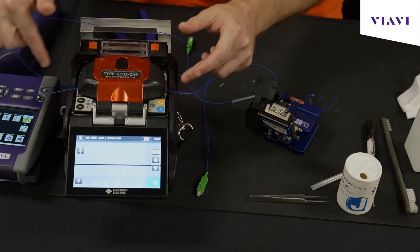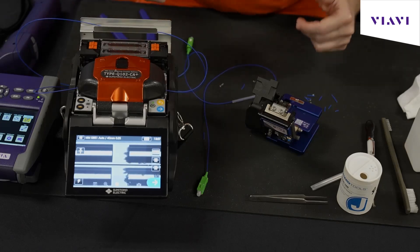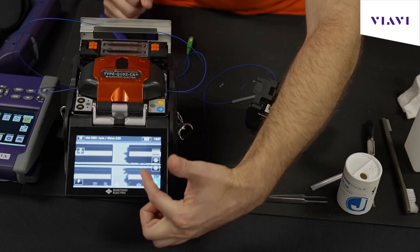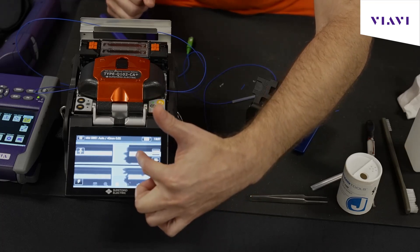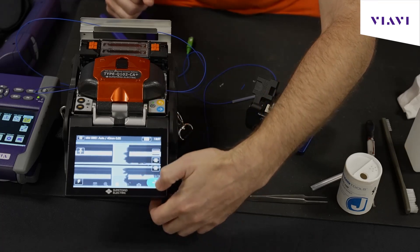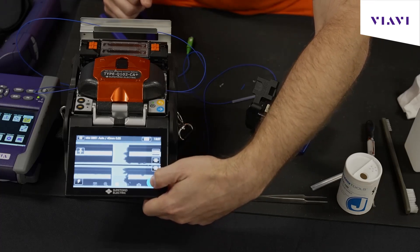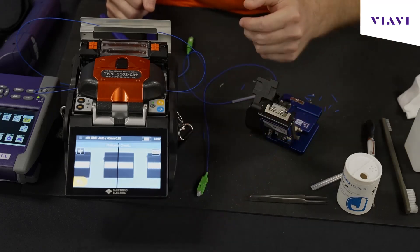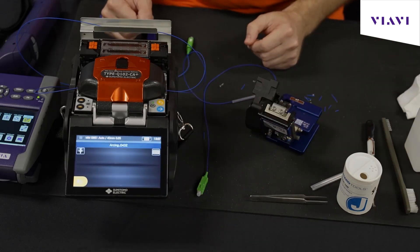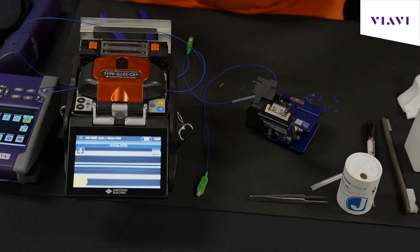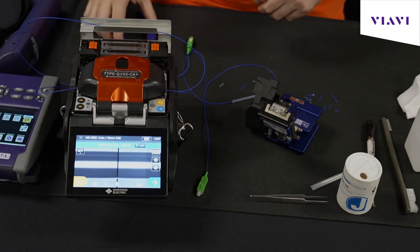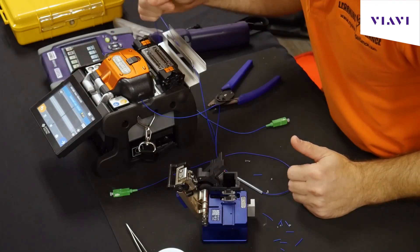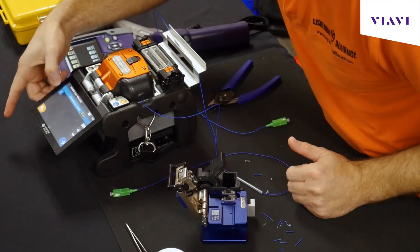Again, just make sure your pigtails aren't going to get pinched by the door. The cameras are going to start checking. Now notice that there is a cleave issue on this right-hand side. This is telling me I need to go and clean it. Sometimes it's just debris. These Sumatumo splicers are actually pretty generous. Let's see if it'll let us go. It flashed off some of the dirt. Everything's good to go, so we're going to go ahead and continue. There's the splice. Now we're arc welding together stuff that's smaller than hair.